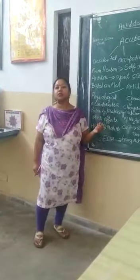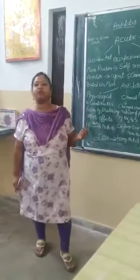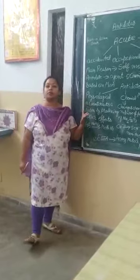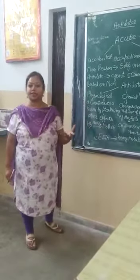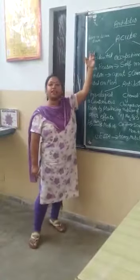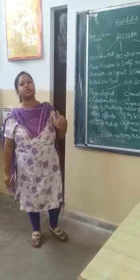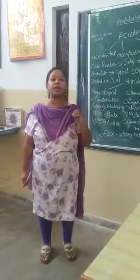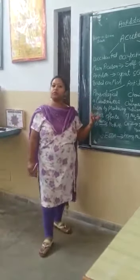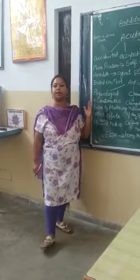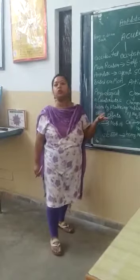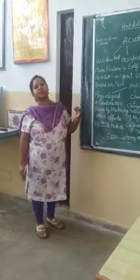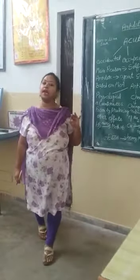Good morning students. Today we will study the chapter of antidotes. Before telling you something about antidotes, you should know what is a poison. Poison is anything — any substance ingested in your body by any route, be it mouth, inhalation, injection, or by whatever route — it will definitely produce initially a disease and then finally death. It depends on how much amount you have consumed that poison.